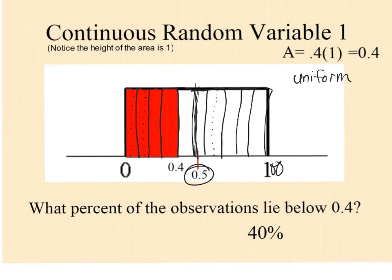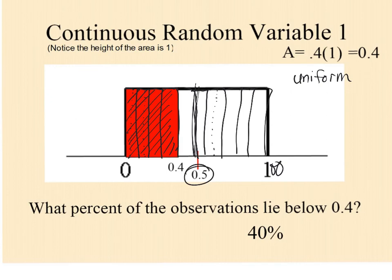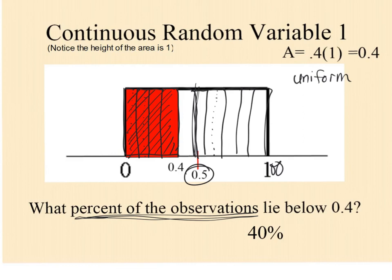If it were completely standardized, like the SAT or ACT, they actually manipulate the data so that most people score in the center, and the farther you get from the center, the fewer people there are. The area of people who scored 40 or less would be 0.4, since it's just a rectangle — base times height: 0.4 times 1. So 40% of people scored 40 or less.